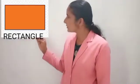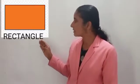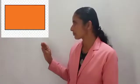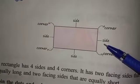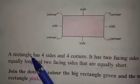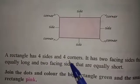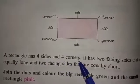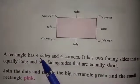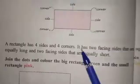Can you see the next one? This is rectangle. R-E-C-T-A-N-G-L-E, rectangle. A rectangle has four sides and four corners.